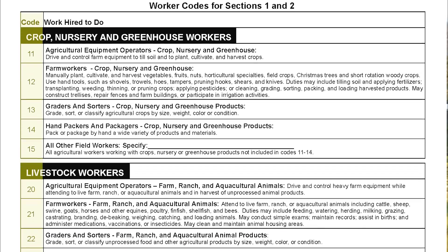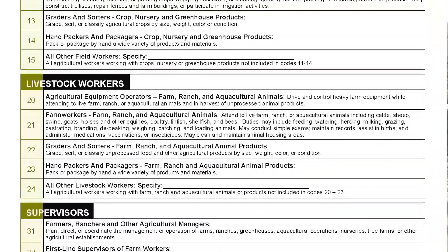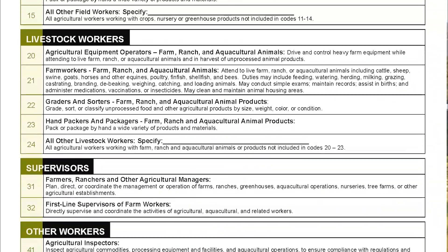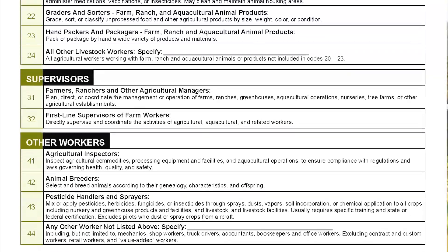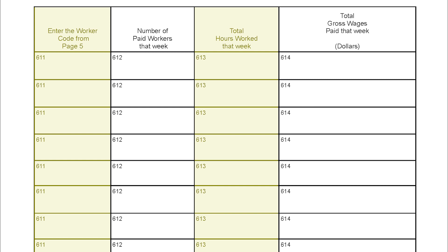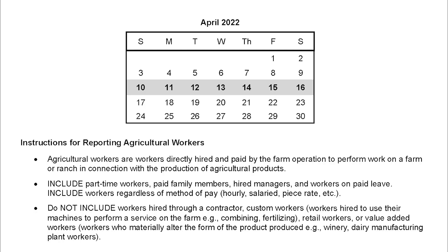When filling out the survey, you will report workers by type using the worker codes found in the questionnaire for the reference week listed on the survey. You will need to report total hours by worker code — that is, the total across all workers reported under the same worker code for the week specified in the questions.